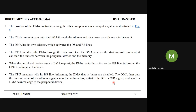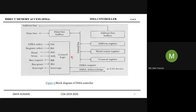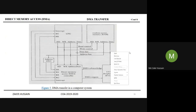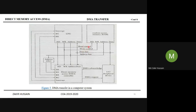Yesterday we discussed a lot about the DMA controller. Today, let us see the DMA transfer. In this DMA transfer, we discussed how the read control, write control, data bus, and address bus lines together form the memory bus. These wires are connected to the memory, which is why we call it the memory bus.